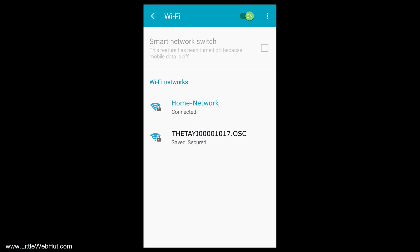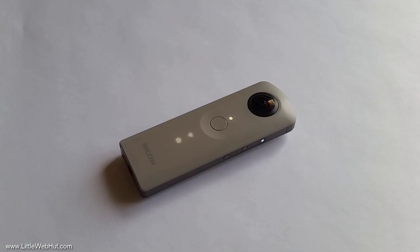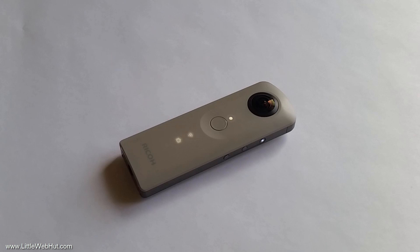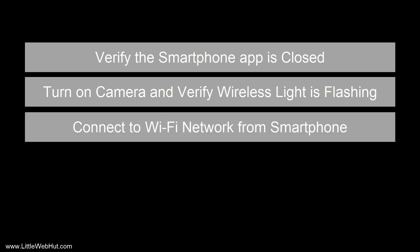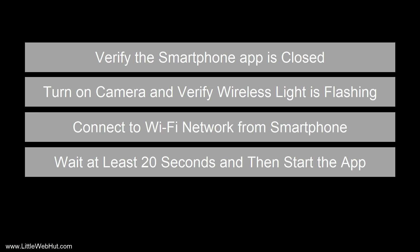With my phone, I only needed to enter the password the first time that I connected. Once the connection is made, the wireless lamp on the front stops flashing and it's turned on. Now that the phone has a Wi-Fi connection to the camera, you can open the app. I've noticed, however, that sometimes when I open the app too quickly after connecting to the Wi-Fi, the app will not be able to communicate with the camera. So this is the procedure I follow: make sure the app is closed, turn on the camera and verify the wireless lamp is flashing, connect to the Theta Wi-Fi network, then wait at least 20 seconds and then start the app.